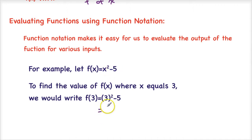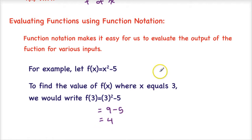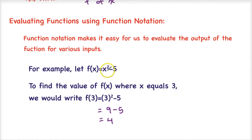So now I can evaluate that. 3 squared is 9, and 9 minus 5 equals 4. What I like to do is always make sure that when I'm putting in a value, I put it in parentheses. So I'm going to replace this x with parentheses just as I see it right here. The reason for that is I want to make sure that I don't lose a negative sign.